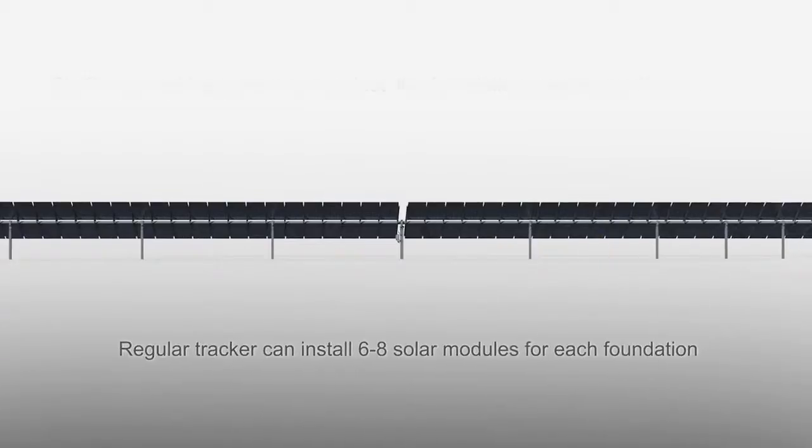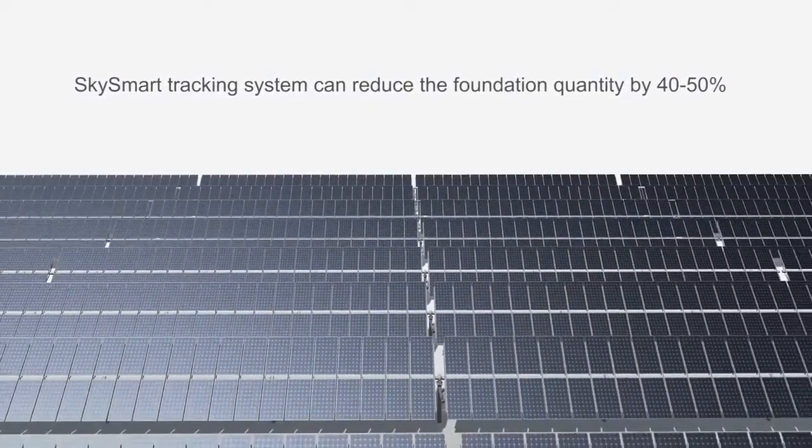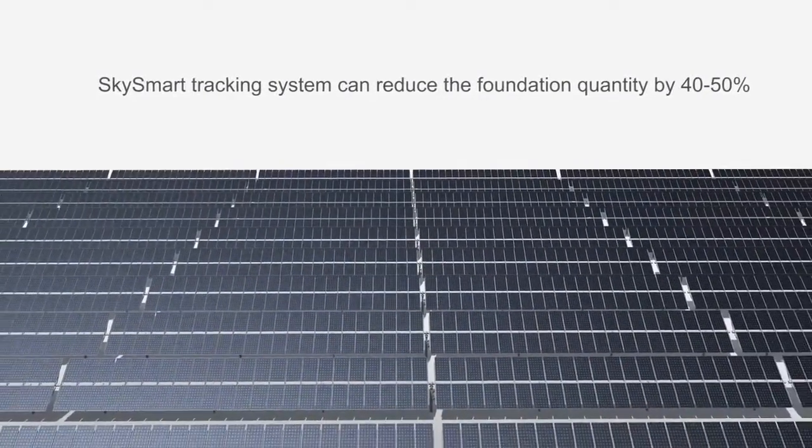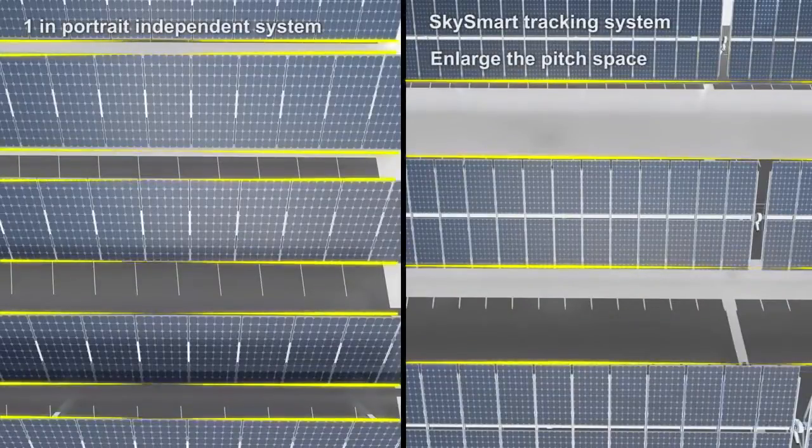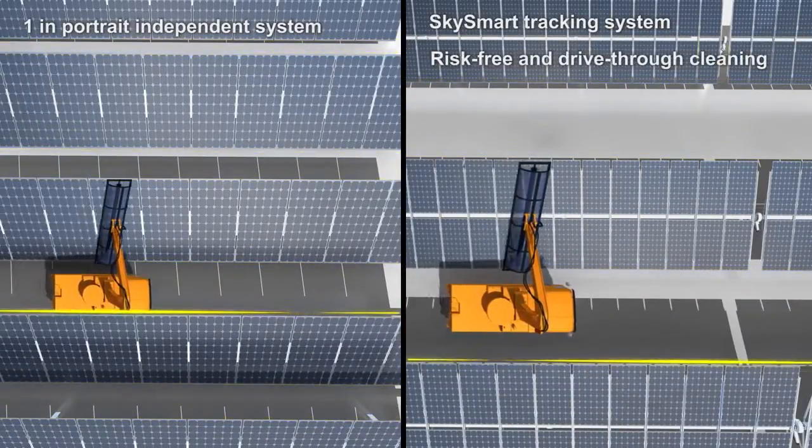Take 385 watt solar module for instance. One megawatt project only needs 200 foundations. This can efficiently reduce the installation and land cost. Two rows of solar modules will double the pitch space and allows the cleaning machine to drive through freely.